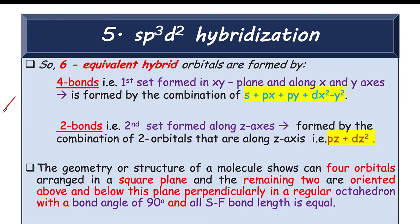So if we look at this structure in x and y axis in one plane, this is formed by the combination of s, px, py and one d orbital which is dx² minus y². So we can take s, px, py and dx² minus y² for the formation of the 4 bonds.